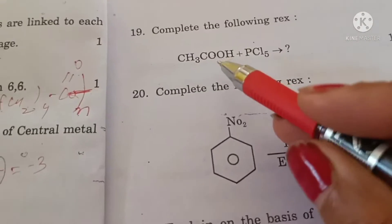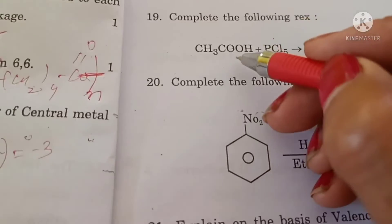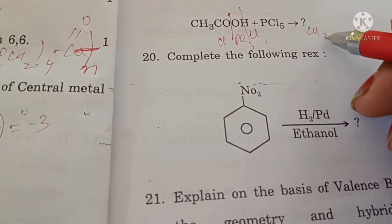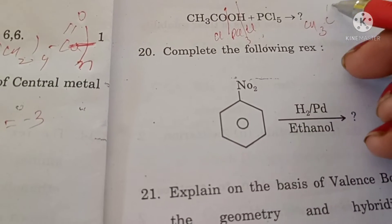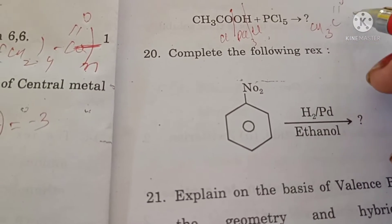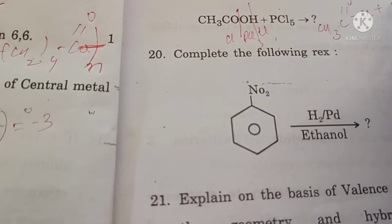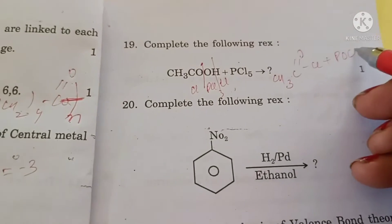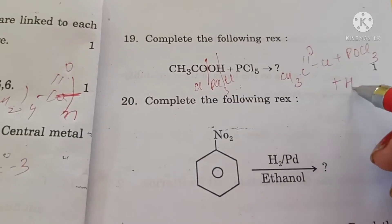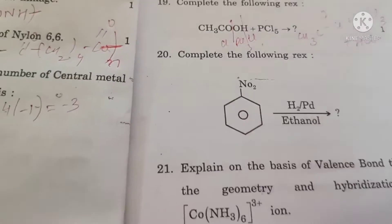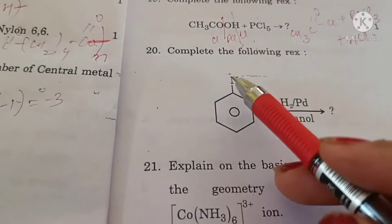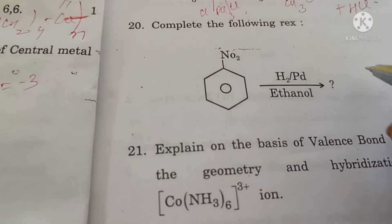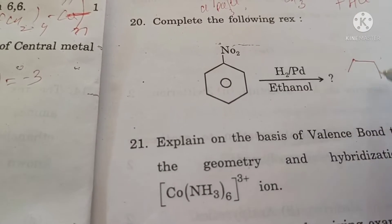Complete the following reaction: PCl5 reacts to give CH3COCl plus POCl3 plus HCl. Complete the following reaction: on reduction it will form aniline.